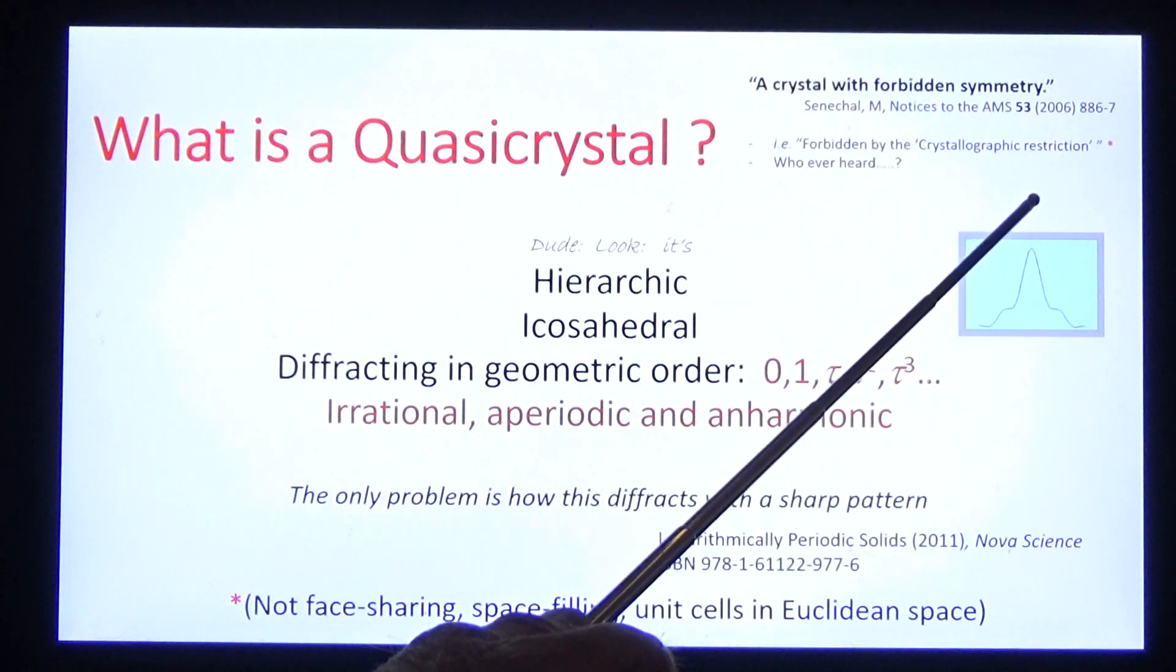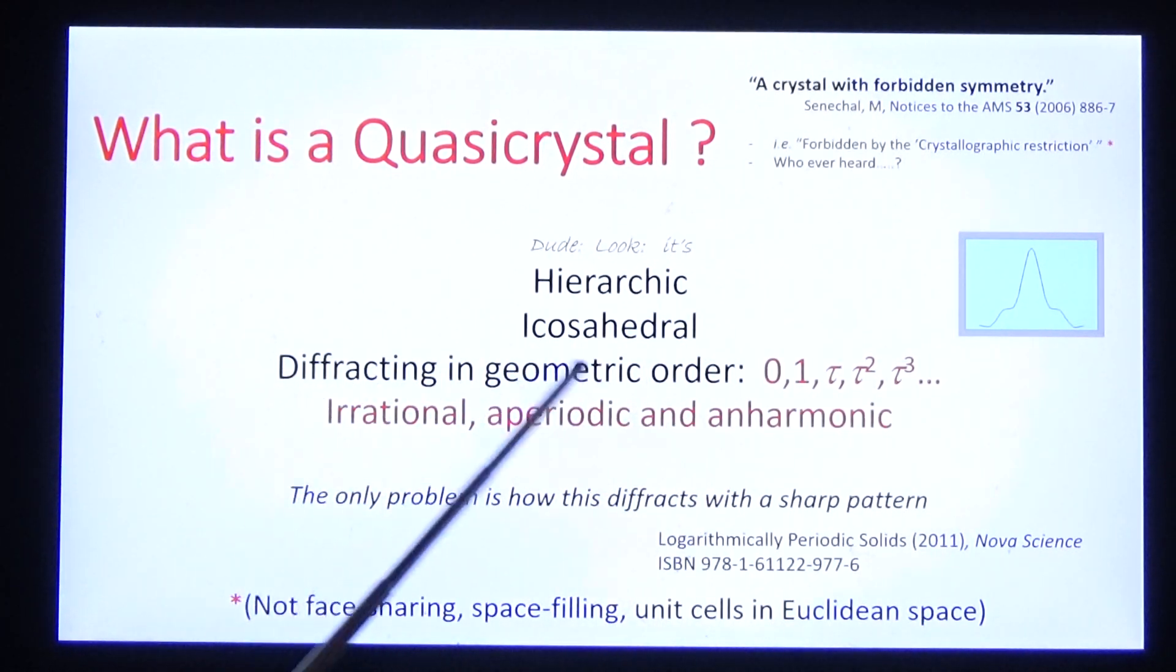But who ever heard of a crystal that diffracts in geometric order zero, one, tau, tau squared, tau cubed, which is irrational, aperiodic and anharmonic?